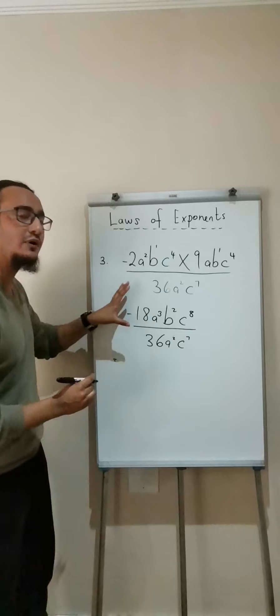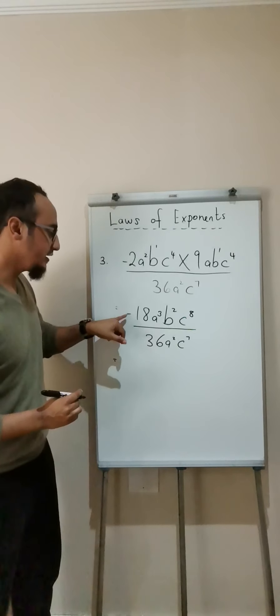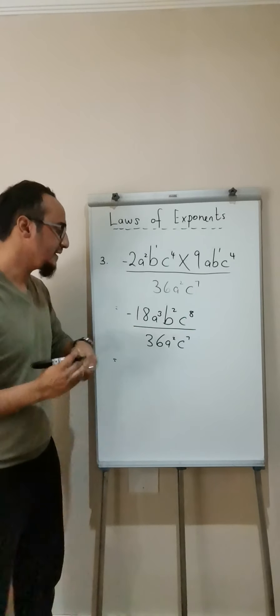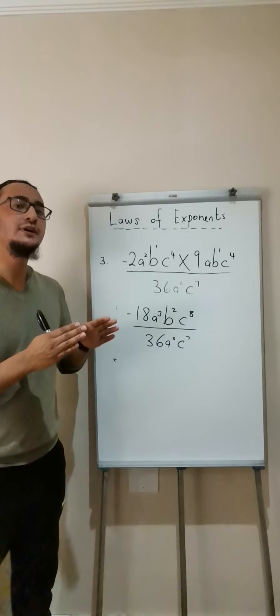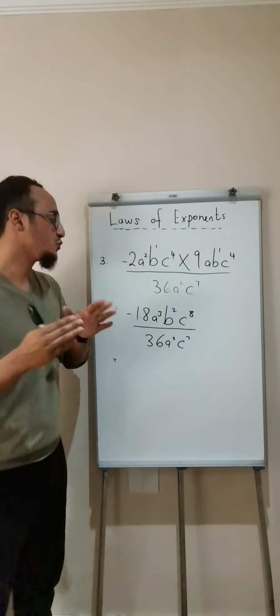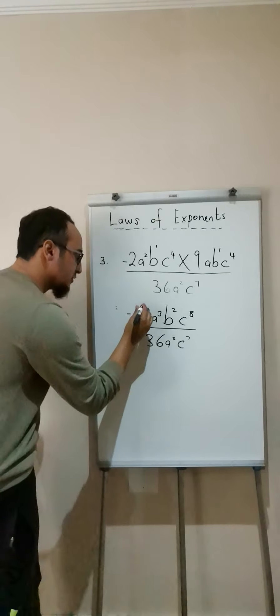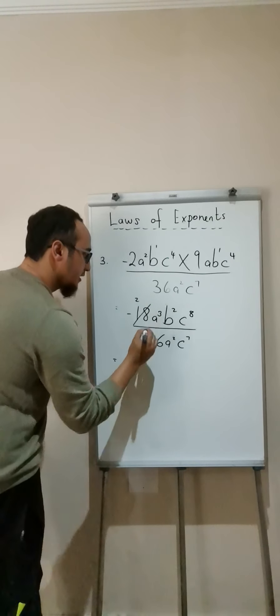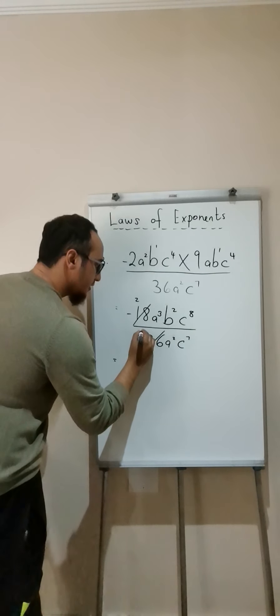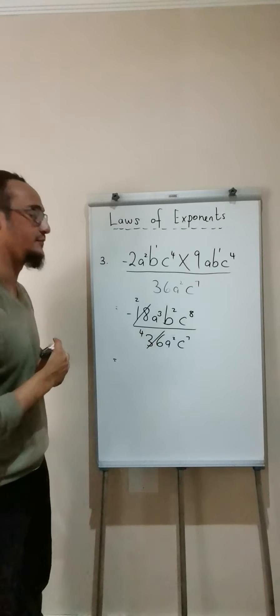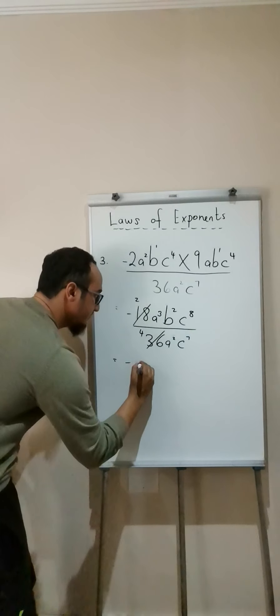Okay. So, remember, now I have a division. Negative 18 divided by 36. What number goes into 18 as well as into 36? That answer is 9. So 9 goes into there twice. 9 goes into there 4 times. So, negative 2.